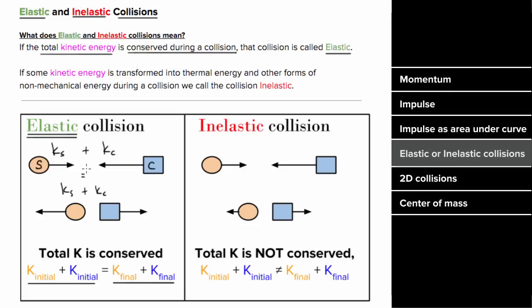It's not enough for the objects to just bounce off each other. If two objects bounce, the total kinetic energy might not be conserved. Only when the total kinetic energy is conserved can you say the collision is elastic.